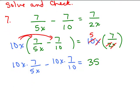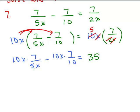Now on the left side, we do our canceling. The x's cancel. 5 goes into 10 twice, so that's going to give you 14. 2 times 7 is 14 minus—next one, 10x times 7 over 10, the 10's cancel—so I have 7x equals 35.